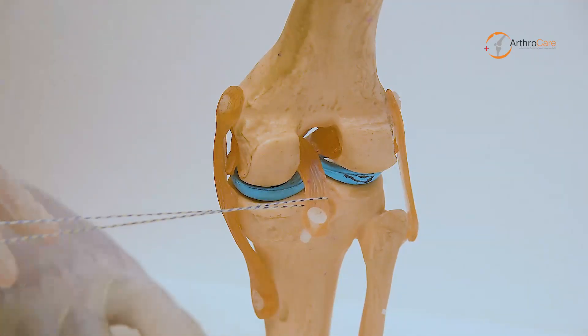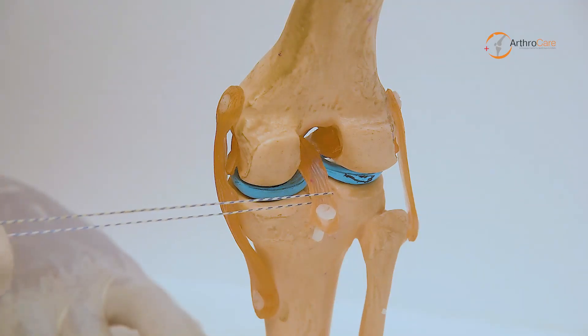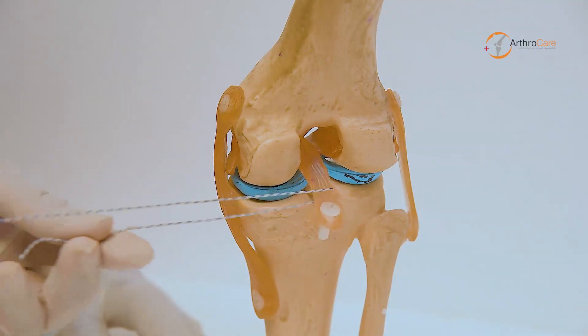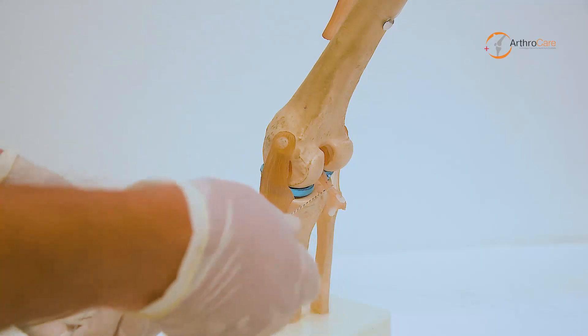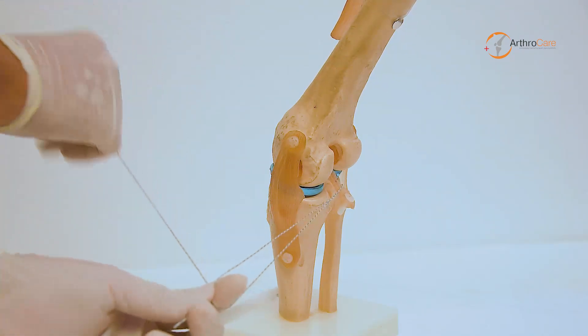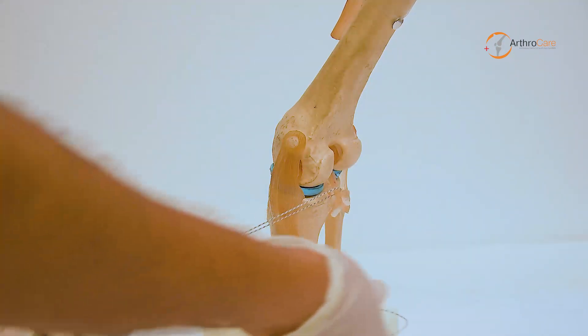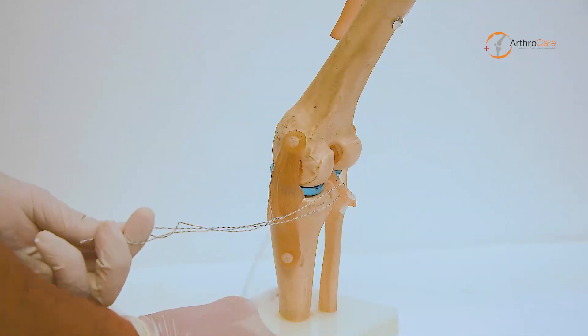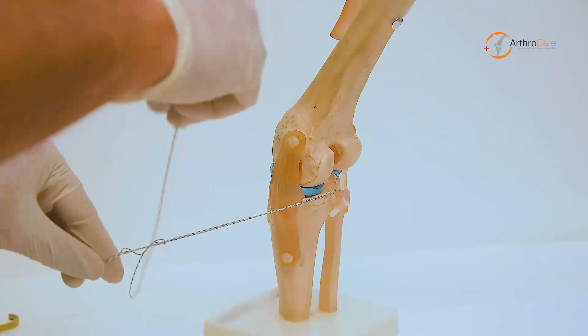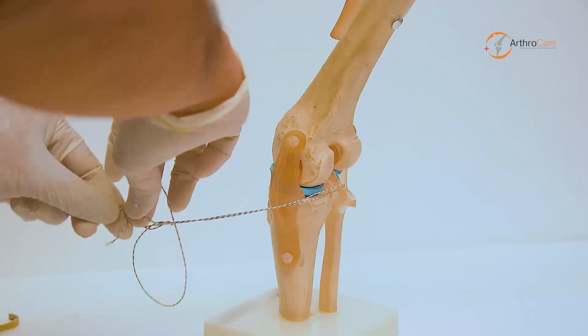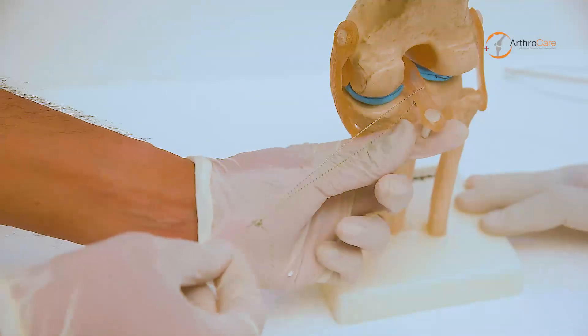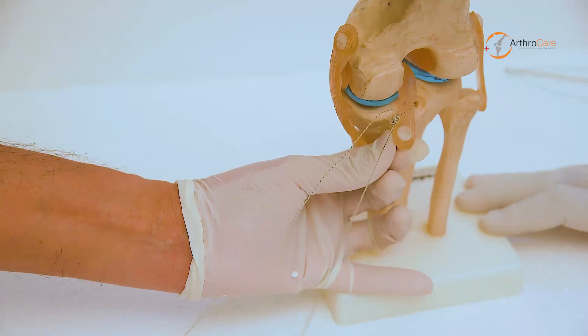I now have both ends of two fiber wires. I will apply a sliding knot. The sliding knot is not tied too tight.